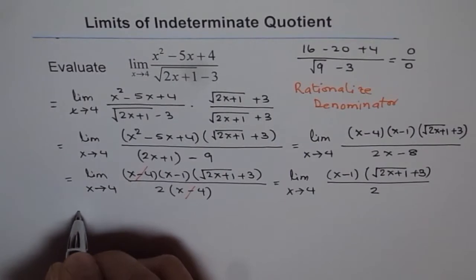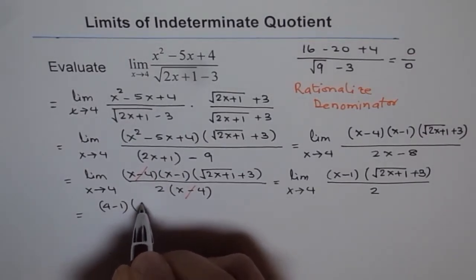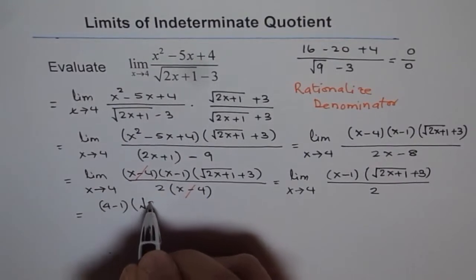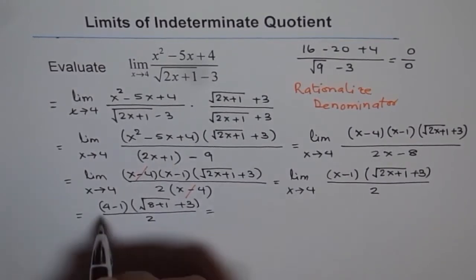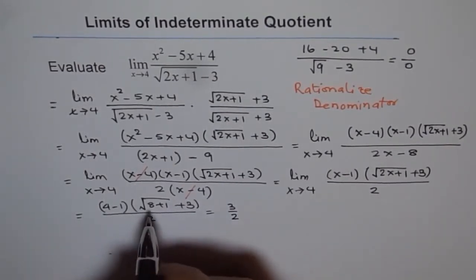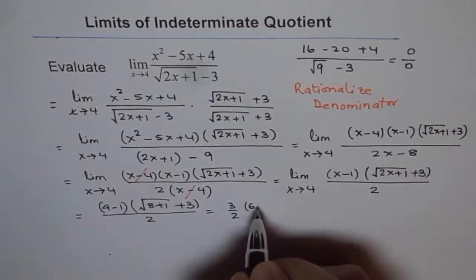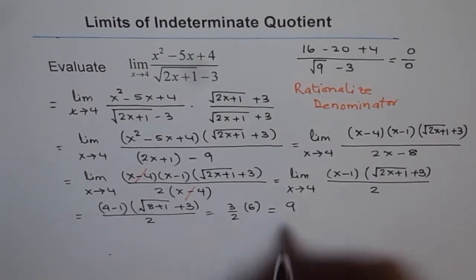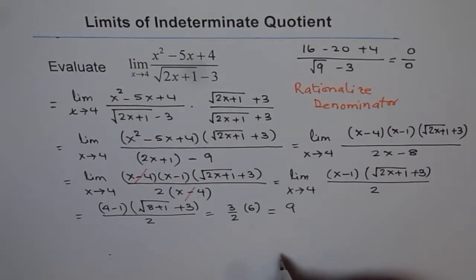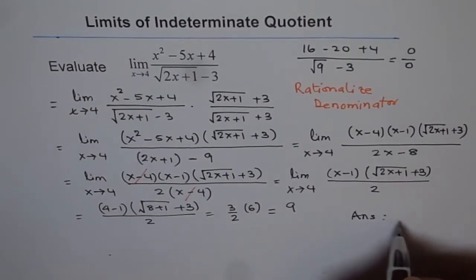Now we can substitute 4 and get the answer. We get 4 minus 1, which is 3, and in the bracket we have square root of 2 times 4 plus 1 plus 3, which is square root of 9 plus 3, giving 3 plus 3 equals 6. So we get 3 times 6 is 18, divided by 2 is 9. So our answer is 9.